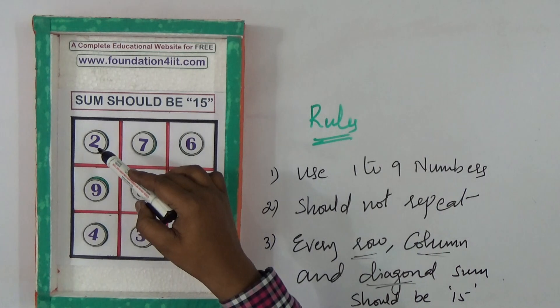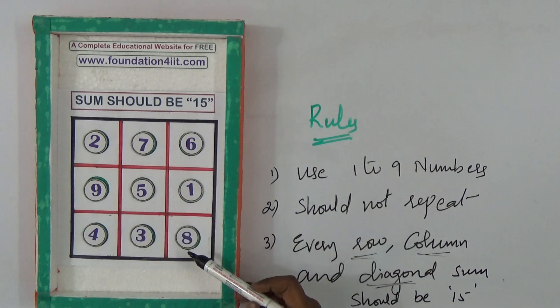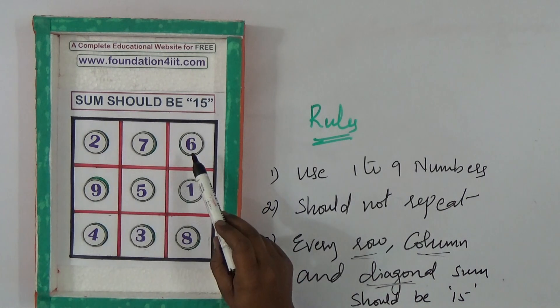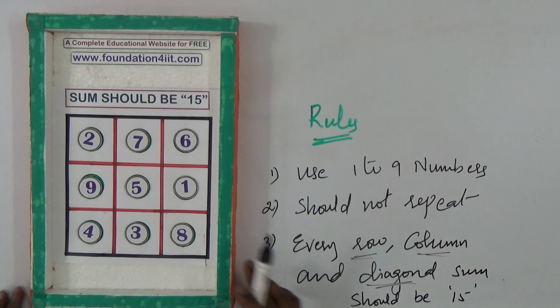See rows and columns, 2, 5, 8 equals 15, and 4, 5, 6 also 15. So let me explain how to remember this, even the solution.